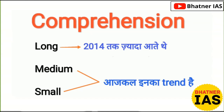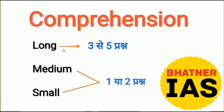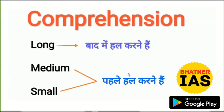As we talk about the pattern — earlier, it was a trend of long comprehensions, and now it is focused on medium or small ones. For details, you can consider the video presented by Harpreet sir. From long comprehension, there may be three to five questions, and from medium and small, there may be one or two questions. I will suggest you to read the long comprehension later, as it is time consuming — just skip it for once and concentrate on medium and small comprehension first.